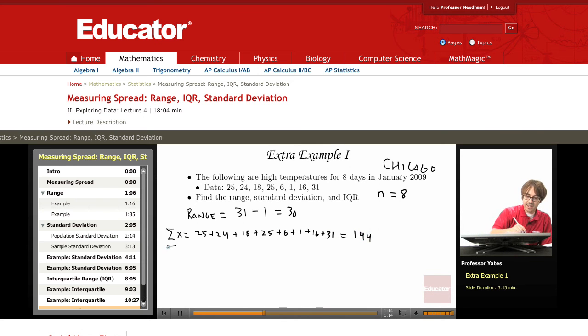I also want to take each observation and square it and add them up. So I'm taking 25 squared plus 24 squared plus 18 squared plus 25 squared plus 6 squared plus 1 squared plus 16 squared plus 31 squared, which gives me a value of 3,404.